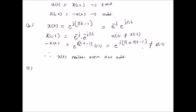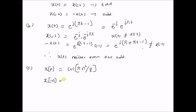Now let us look at another example, given by x(n), a discrete signal equal to cos(πn²/8). Clearly, x(−n) = cos(π(−n)²/8), but (−n)² = n², so this equals x(n). Therefore, it is an even signal.